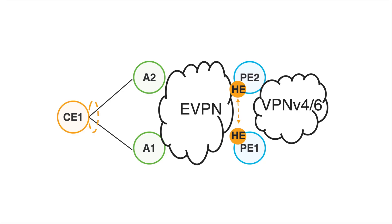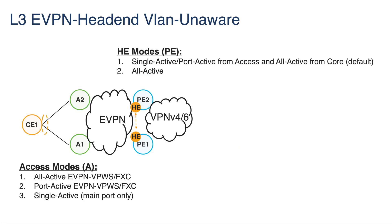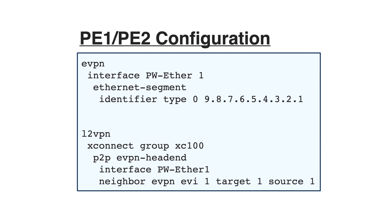Hello everyone. My name is Jirika Lubka, I'm a technical marketing engineer, and today I will talk about the latest EVPN features in Cisco iOS XR 7.3.1. The first feature is EVPN headend, a very important enhancement for the existing pseudowire headend solution. We are bringing redundancy into the access with EVPN VPWS and all redundancy modes, using the EVPN control plane on top of the headend to decide which interface will be active and which will be standby. The configuration is similar to before, except we replace the pseudowire with EVPN VPWS and configure the Ethernet segment.